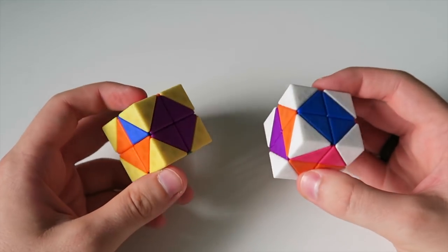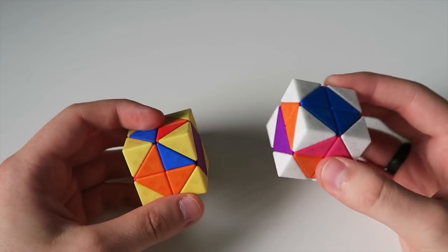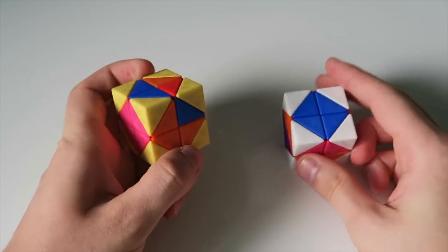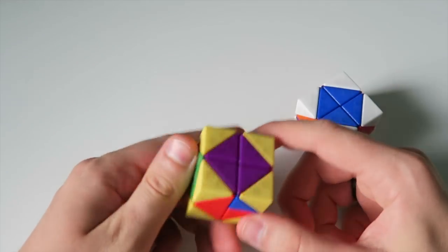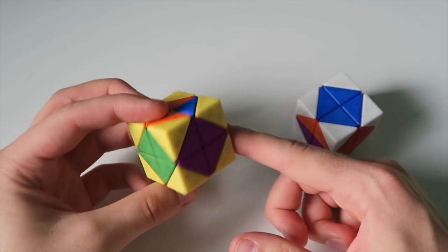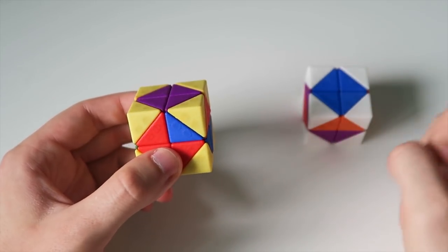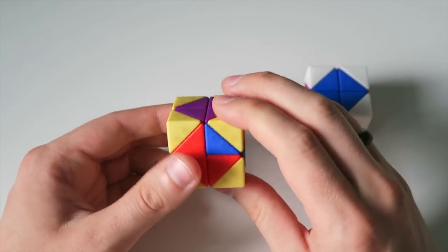So now as you can see it's given us one 2x2 with a u clockwise move and then it's also given us another t perm here. So this should be fairly self explanatory. We're going to do the t perm